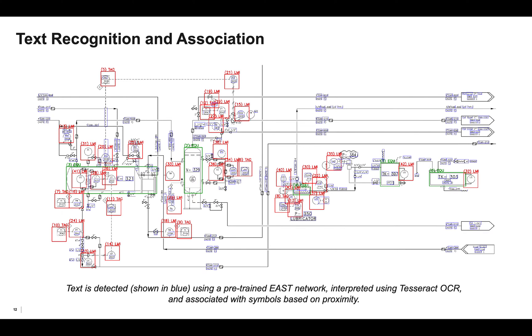Next, the second step in our diagram digitization pipeline is text recognition and association. Text plays an important role in these diagrams, serving as identifiers for various equipment and instruments, as well as descriptors for the process lines. To detect text, we use a pre-trained EAST network to obtain these blue bounding boxes around text regions, and then we interpret those text areas using Tesseract OCR. Finally, we associate each text region with nearby symbols.